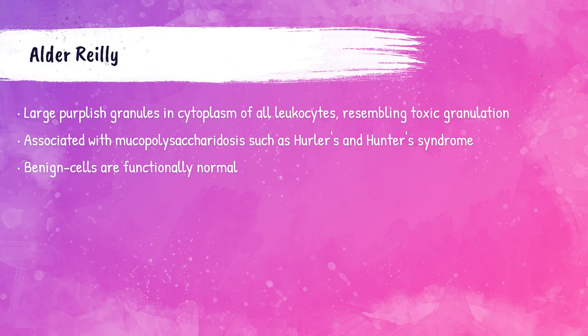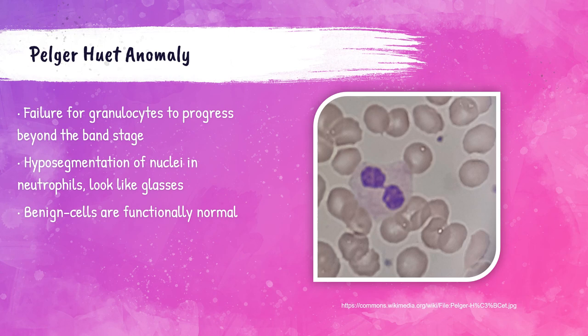Pelger-Huët anomaly is an inherited condition where the neutrophils and eosinophils in the peripheral bloodstream fail to progress beyond the band stage. There is hyposegmentation of the nucleus — it almost looks like a pair of glasses. These cells are functionally normal and benign; they just look kind of odd.